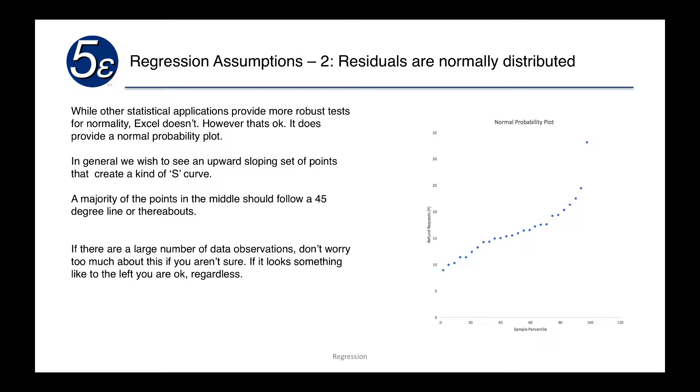In general we wish to see an upward sloping set of points in kind of an S curve. A majority of the points in the middle should follow a 45-degree line or thereabouts. If the two tails curve away from the line, that's considered fine. If there are a large number of data observations, you don't have to worry too much about this if you're not sure.